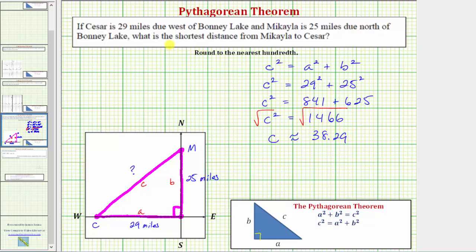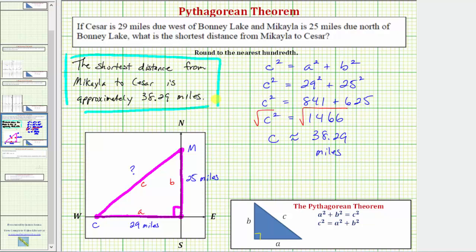And of course the units are miles. So the shortest distance from Michaela to Caesar is approximately 38.29 miles. I hope you found this helpful.